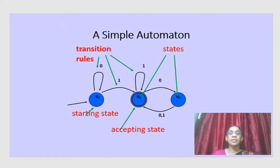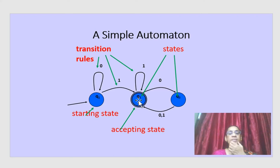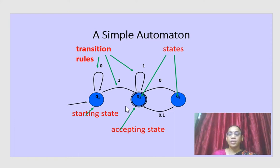Before entering into this part, let me explain the transition diagram. Here, q1, q2, q3 are the states and 0, 1 are the input symbols. The arrow mark represents the starting state — q1 is the starting state — and the double circle represents the accepting state, that is the final state of the machine.